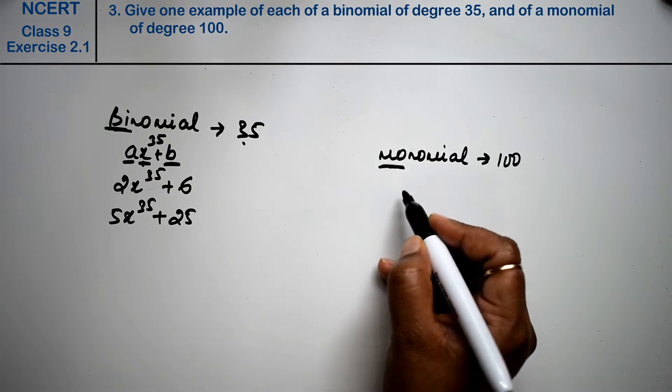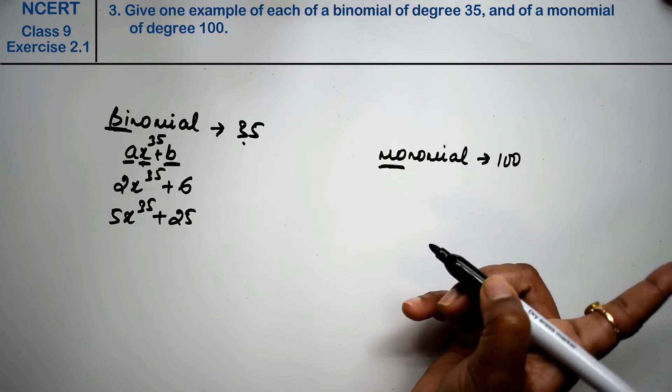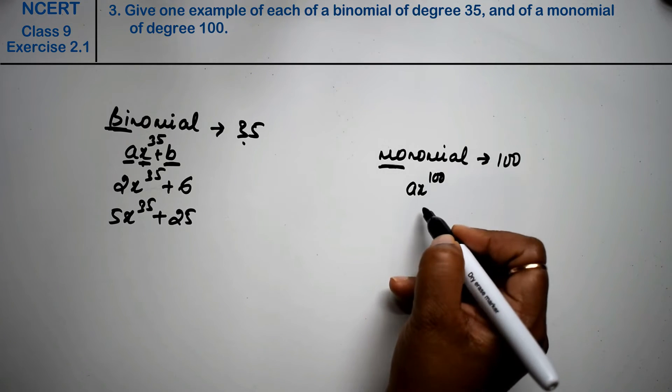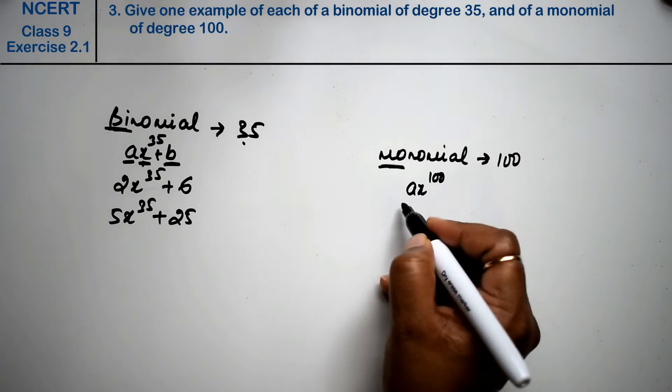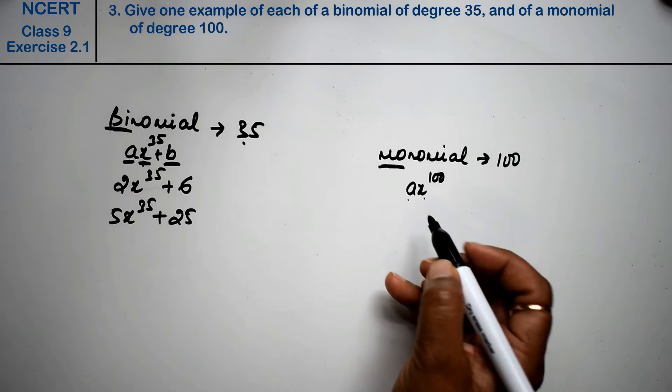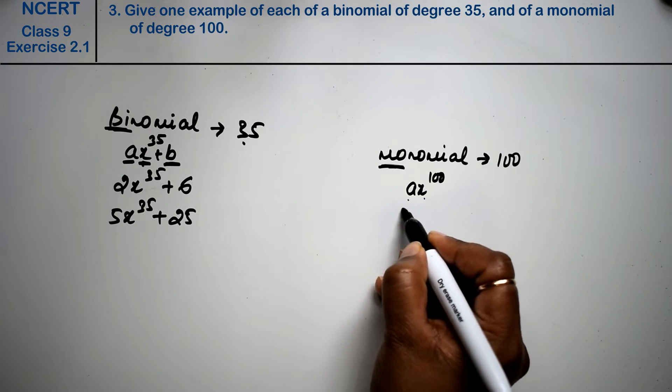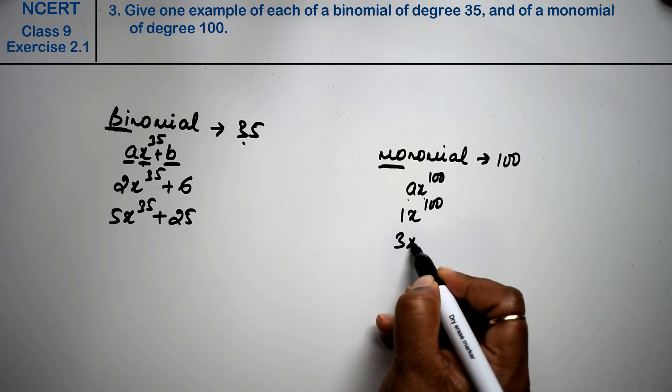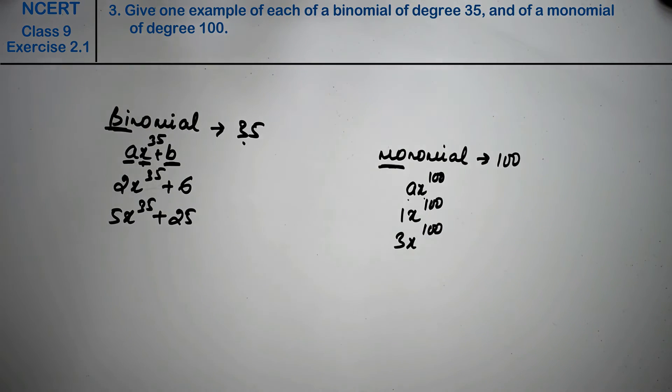For a monomial, there is only one term, like ax^100. If there is no constant, you can write anything: 1x^100 or 3x^100 is the answer.